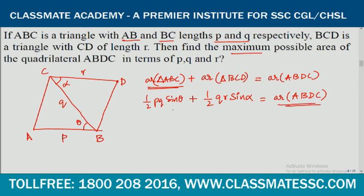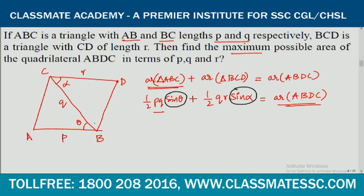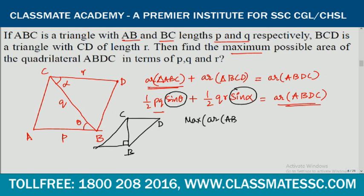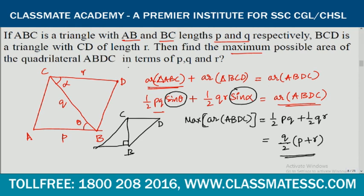For the total area to be maximum, since P, Q, and R are fixed constants, sin(theta) and sin(alpha) must each be maximum, meaning sin(theta) equals 1 and sin(alpha) equals 1, so theta equals 90° and alpha equals 90°. Substituting, the maximum area of ABDC equals (1/2)PQ plus (1/2)QR. Taking Q/2 common, the maximum area equals Q/2 times (P plus R).